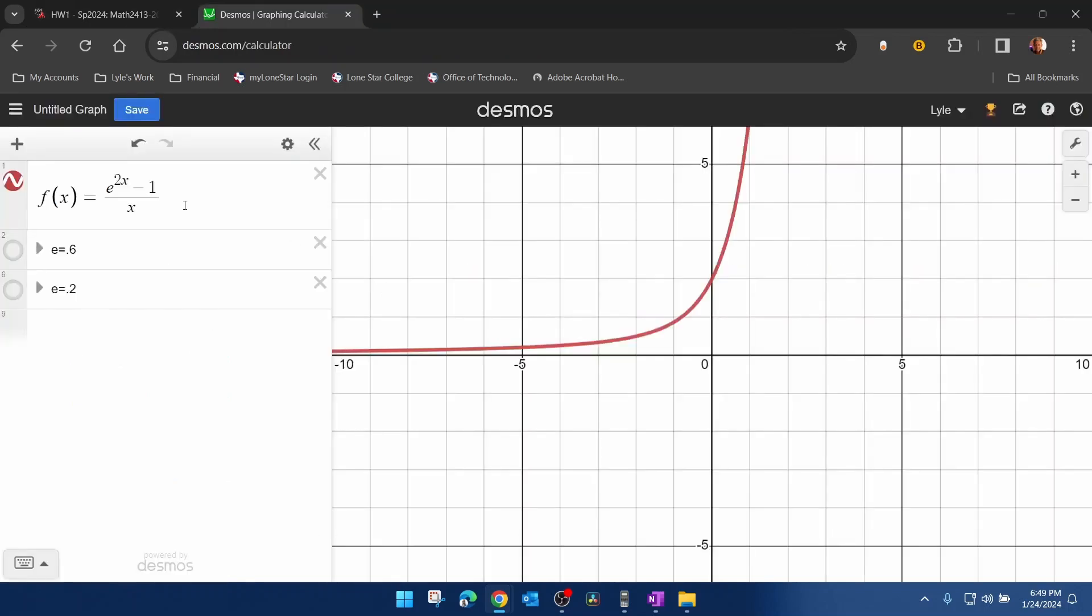All right, so I've already got my Desmos graph sketched. I've got my function input, and then what I've done is I've organized this neatly into folders. So here's what I did.